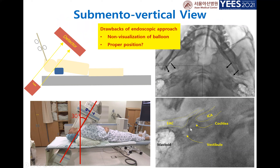Using fluoroscopic positioning, you can clearly see the cochlea, vestibule, mastoid, e-tube, external auditory canal, and middle ear space.